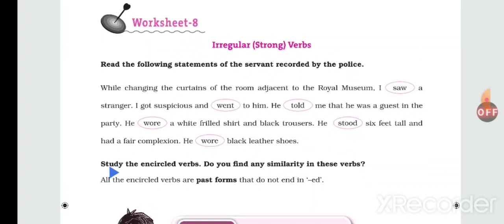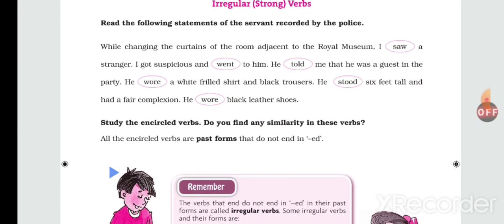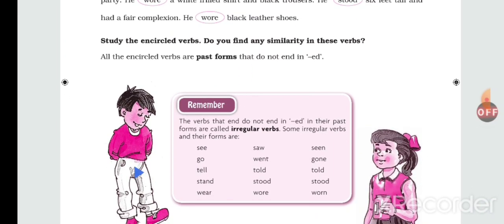Now you see that all the encircled verbs are past forms that do not end in ed. Remember that the verbs that do not end in ed in their past forms are called irregular verbs.